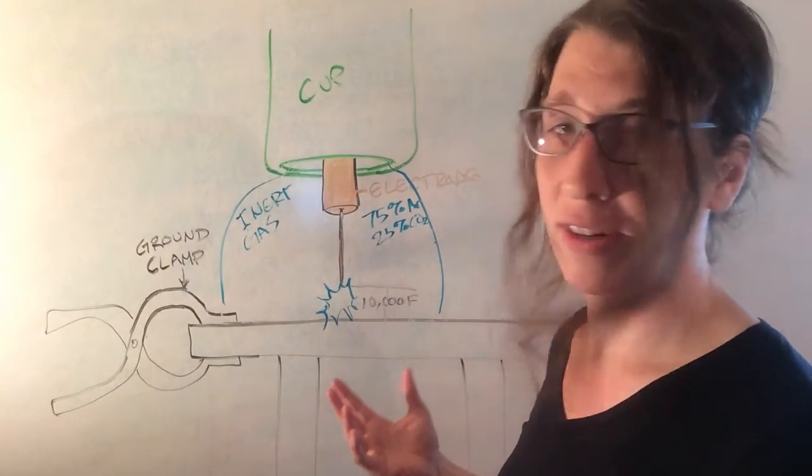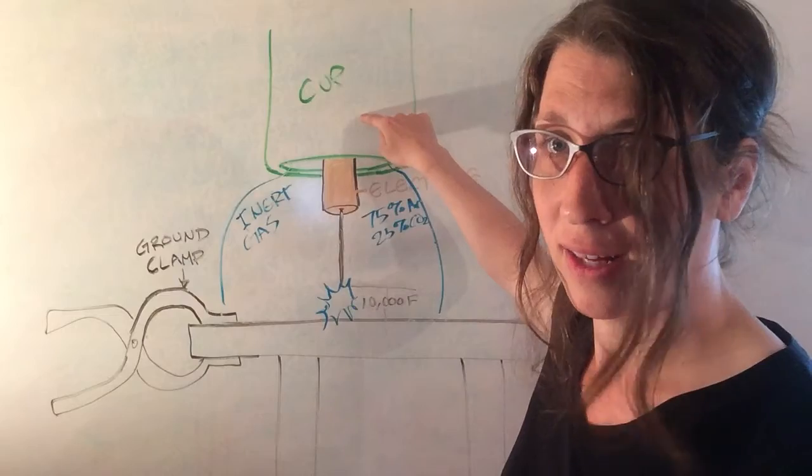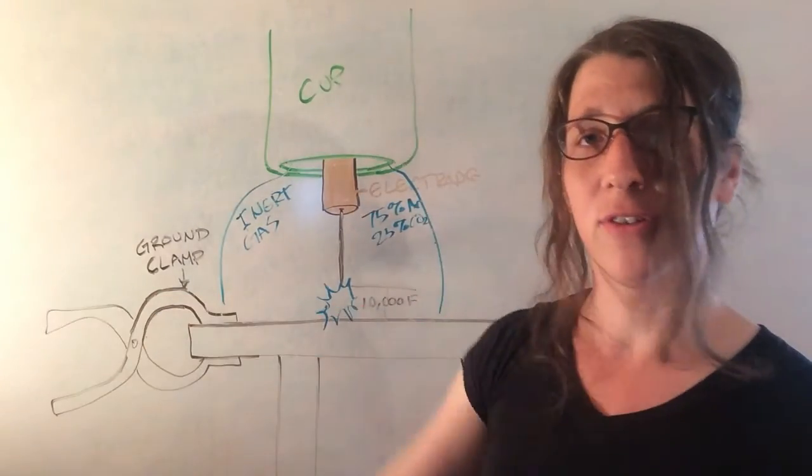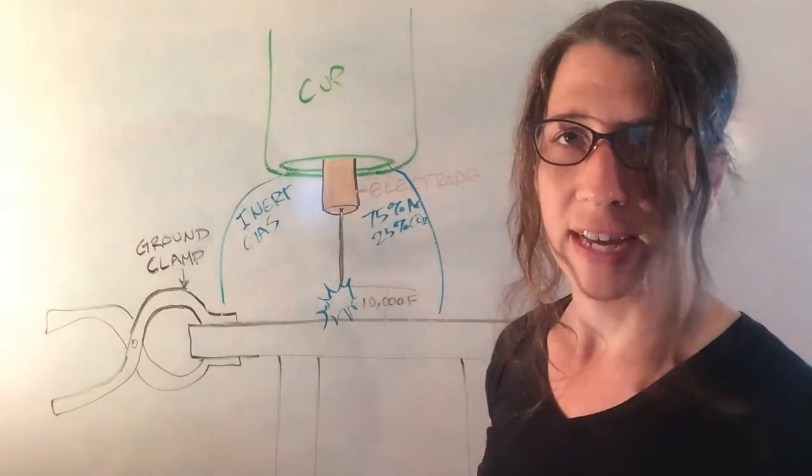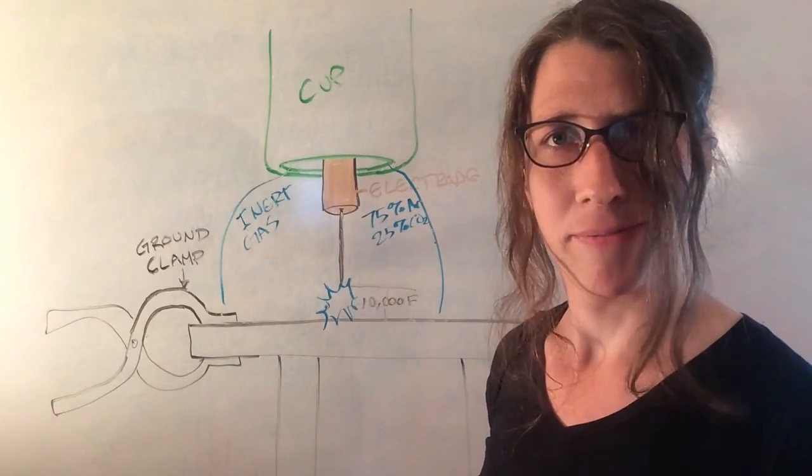So from there, all you need to know is electrons want to flow from your positive electrode, all the way down to your neutral ground clamp or your negative symbol, and you're ready to go. That's it.